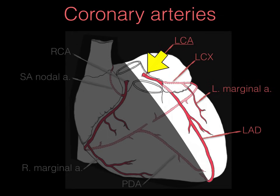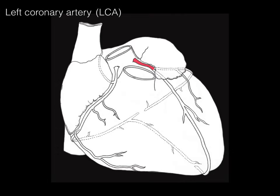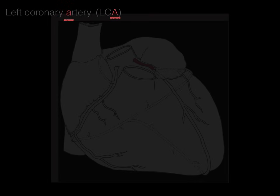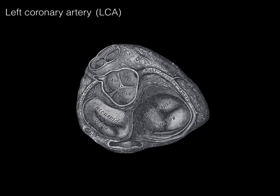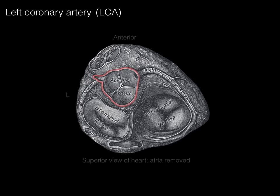The left coronary artery, known as LCA, arises from the aorta and is a very short artery — maybe two to three centimeters long — coursing along the coronary sulcus. In a superior view of the heart with the atria removed, we see the aorta with the left cusp highlighted, showing the opening for the left coronary artery. The LCA then bifurcates into the LAD and the LCX.